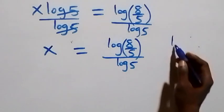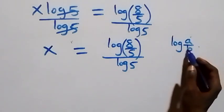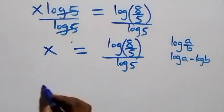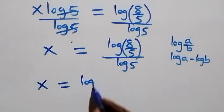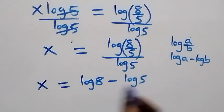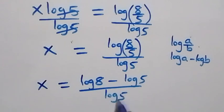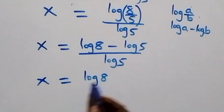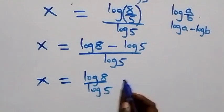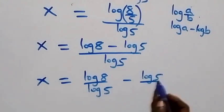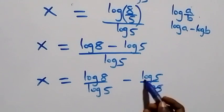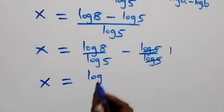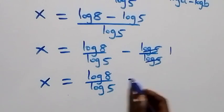Using the log quotient rule, log(a/b) equals log a minus log b, so log(8/5) becomes log 8 minus log 5. This gives x equals (log 8 minus log 5) over log 5. Separating into two fractions: x equals log 8 over log 5 minus log 5 over log 5, and since log 5 over log 5 equals 1, we get x equals log 8 over log 5 minus 1.